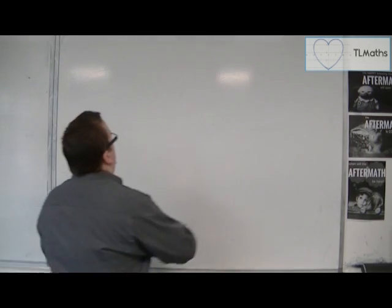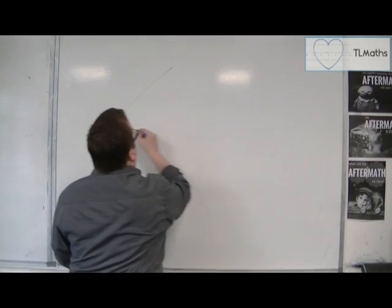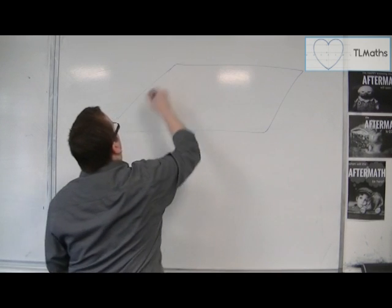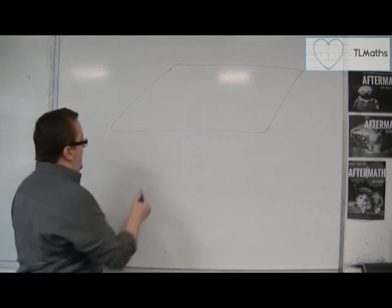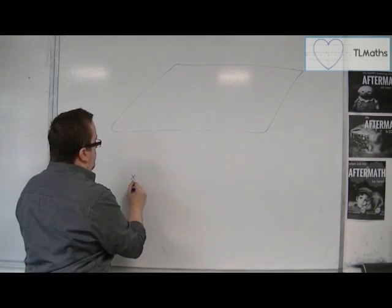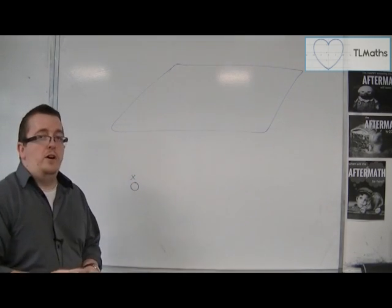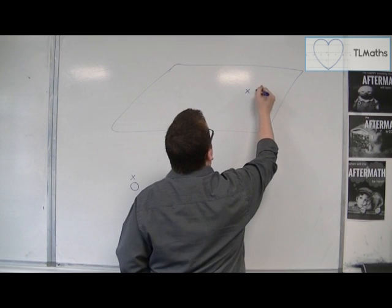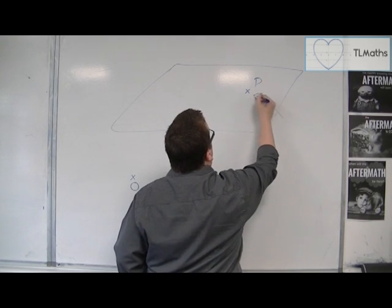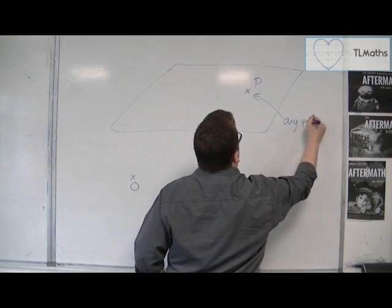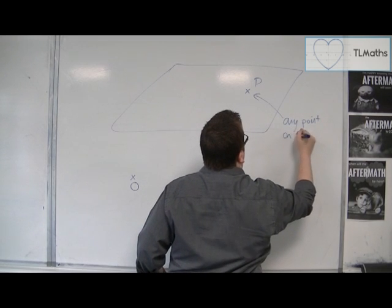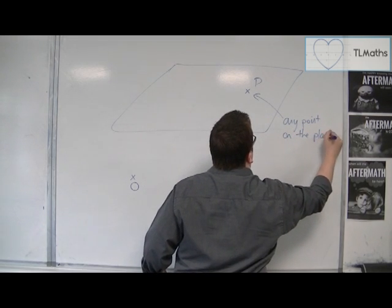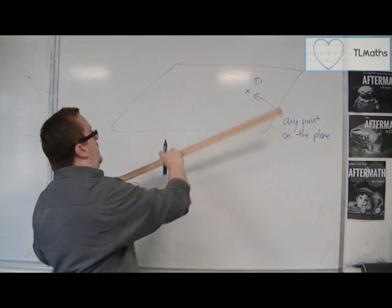So here is a plane, let's draw one in. And here is the origin O, and I want to be able to get to any point that is on the plane. So here's the point P, for example, that's any point on the plane, and I want to get there.